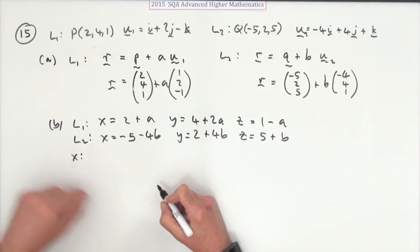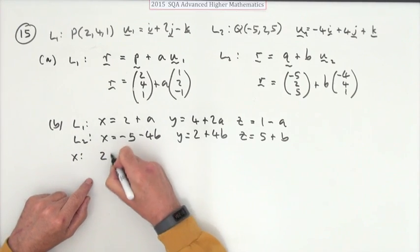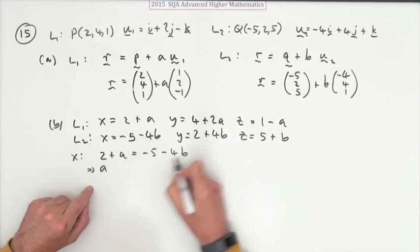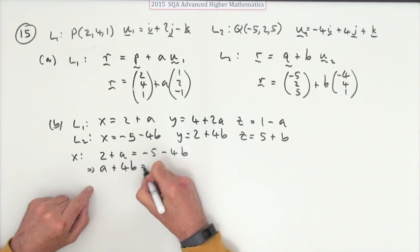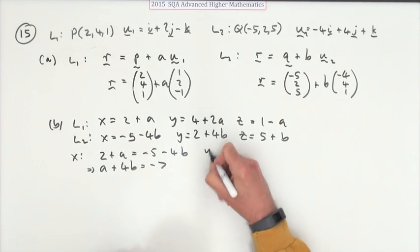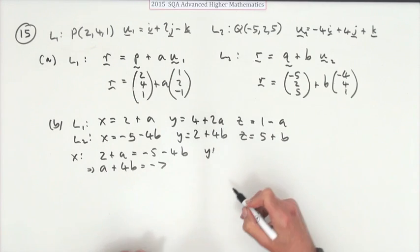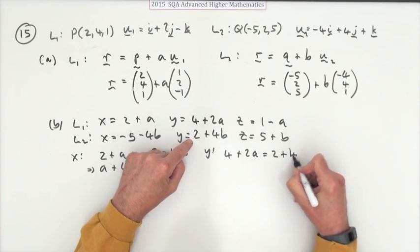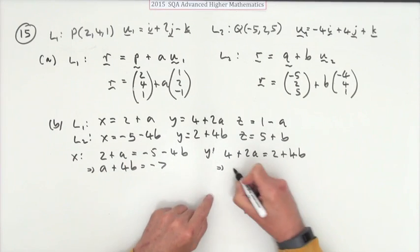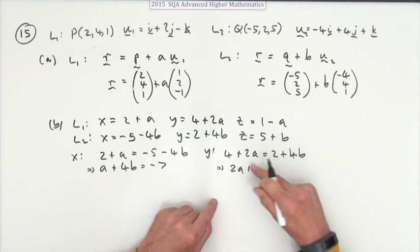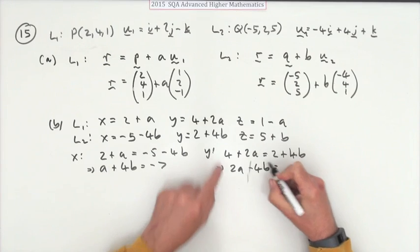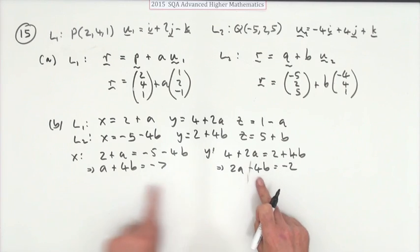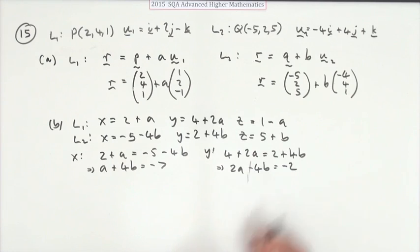So, the x's, if the x's are meant to be equal, then I've got this: 2 plus a should equal negative 5 minus 4b. So a plus 4b should equal negative 7, unfortunately. For the y's, if the y coordinates are equal, then 4 plus 2a should equal 2 plus 4b. Rearrange that. That means that 2a, I was going to write plus there, minus 4b should equal negative 2. You'd be tempted to knock that down to just a minus 2b equals negative 1, but that's handy just for the simultaneous equations.